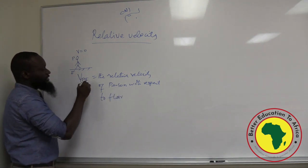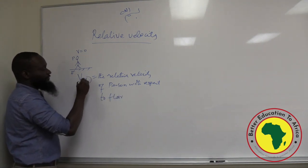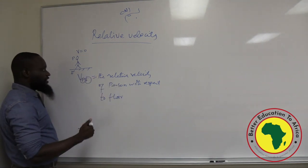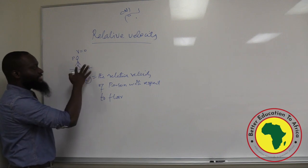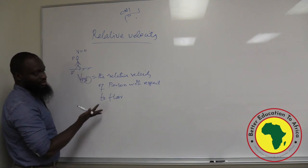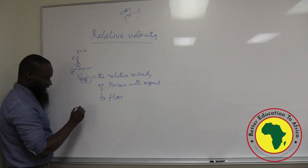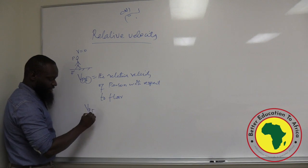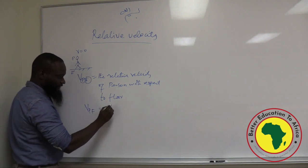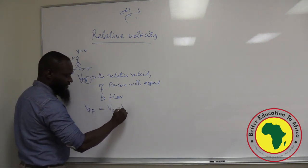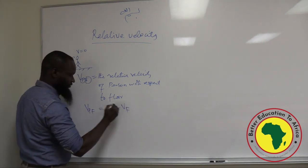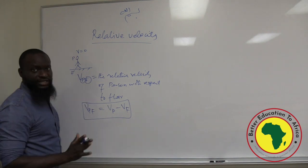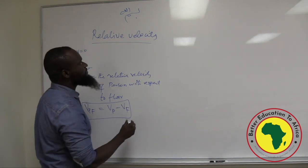This is the person, and this is the frame of reference you are referring the person to. So if the person is standing, V-P-Floor is zero. The definition is V-P-Floor equals V-Person minus V-Floor. That is the definition of Relative Velocity, and it is very easy to understand.